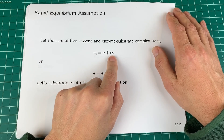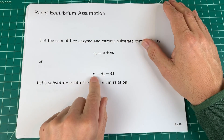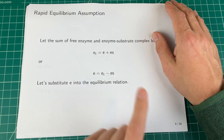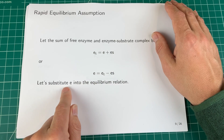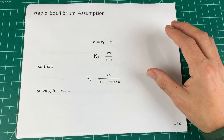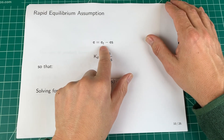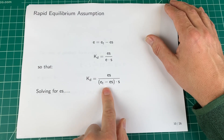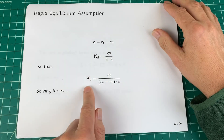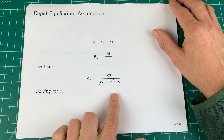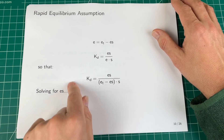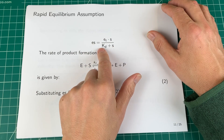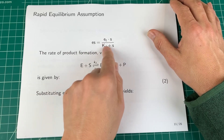We can rearrange the conservation equation so that free enzyme equals E_total minus ES. I'll substitute this into the equilibrium relation, replacing E with (E_T minus ES). That gives KD equals (E_T minus ES)·s divided by ES. Now I solve for ES — getting ES on its own on one side — and end up with an expression where ES only appears on one side and all other terms are on the other.